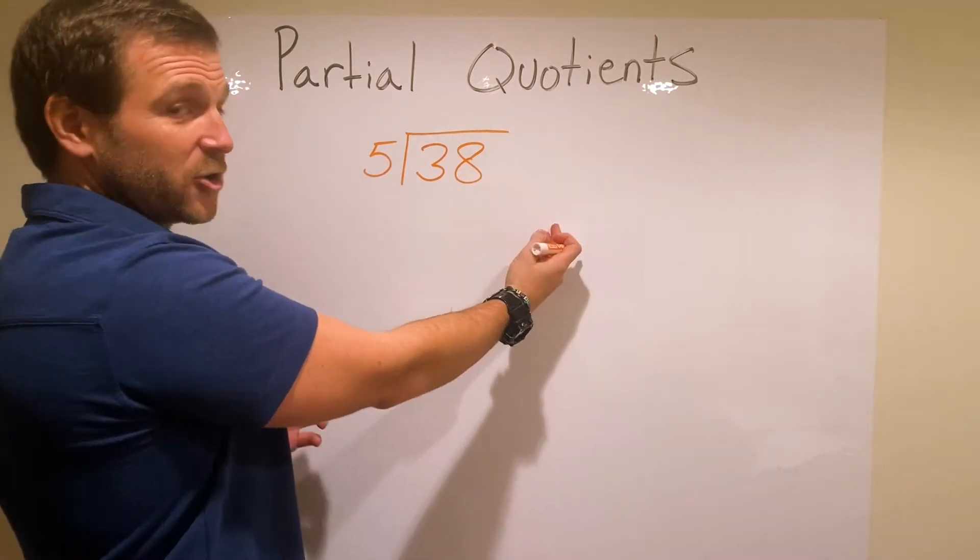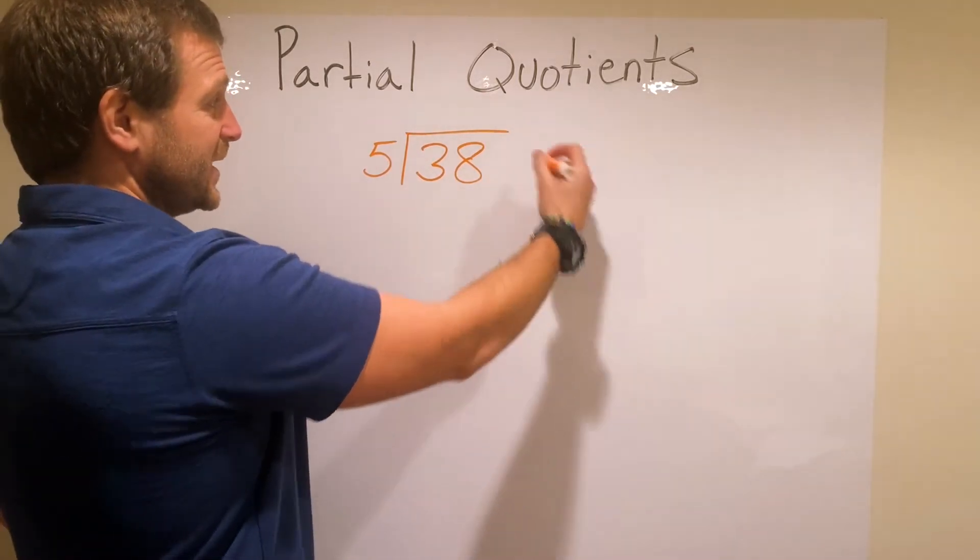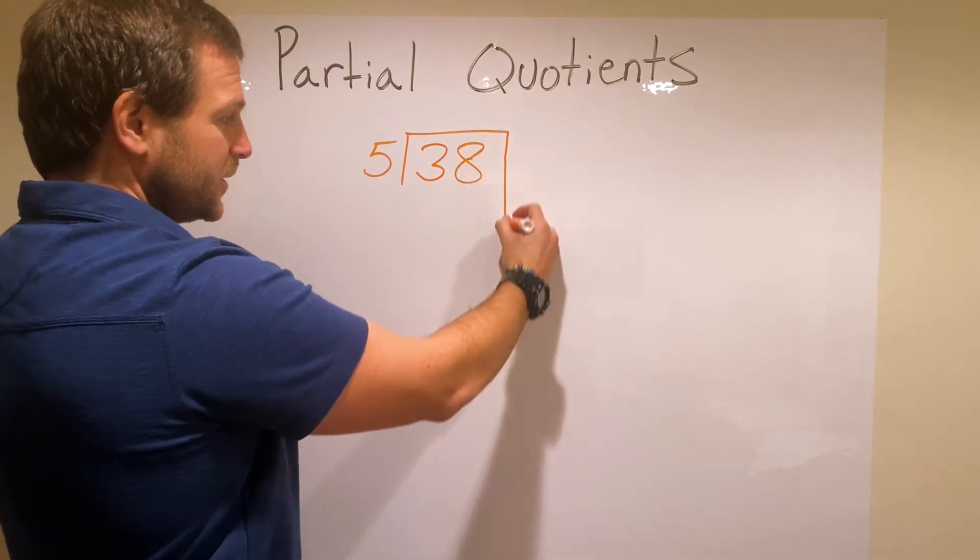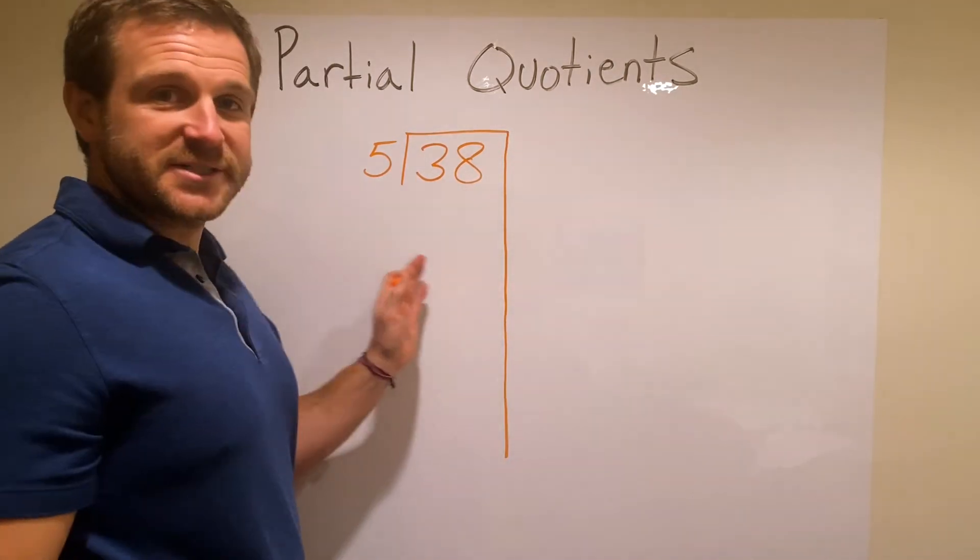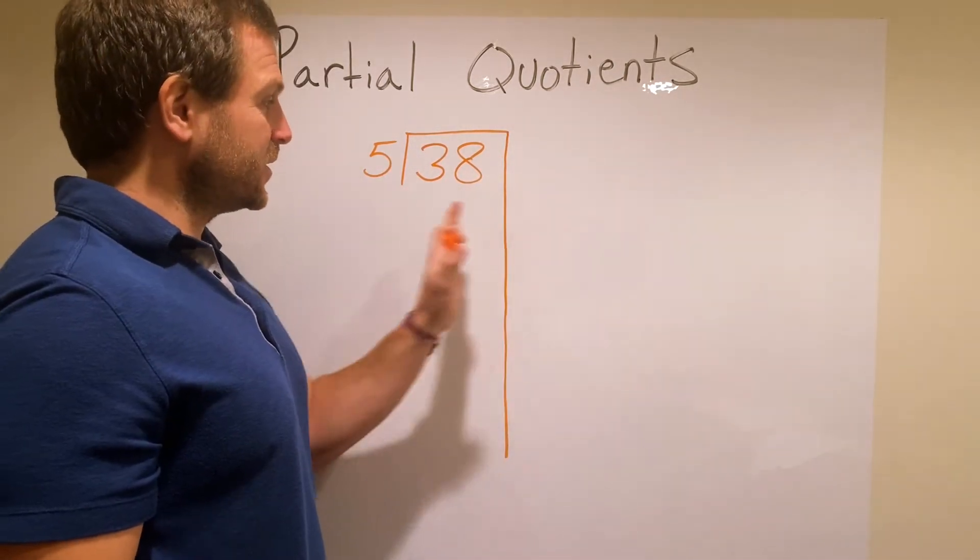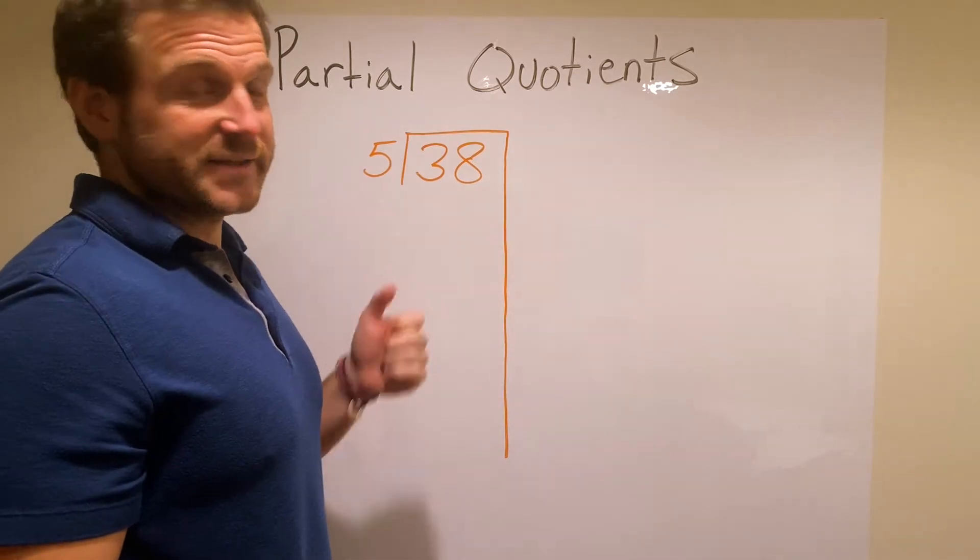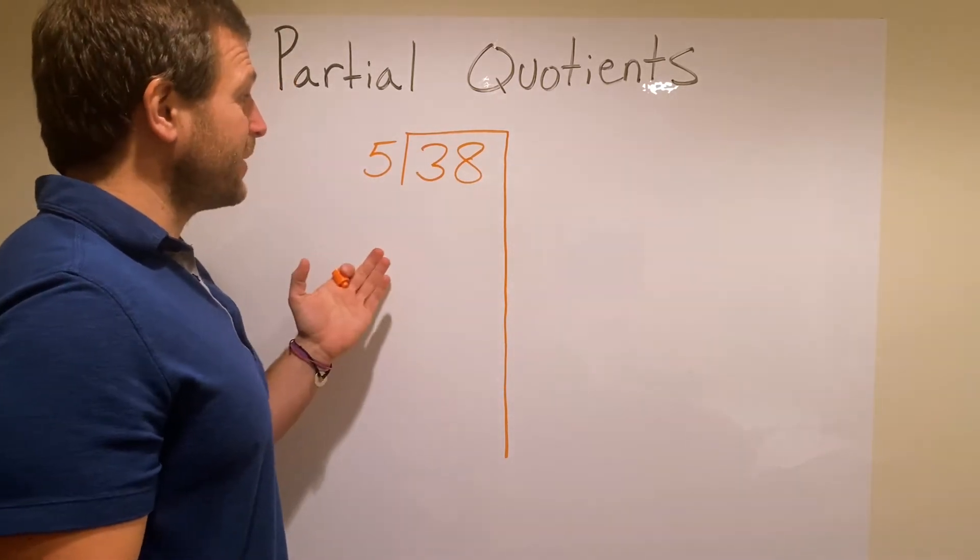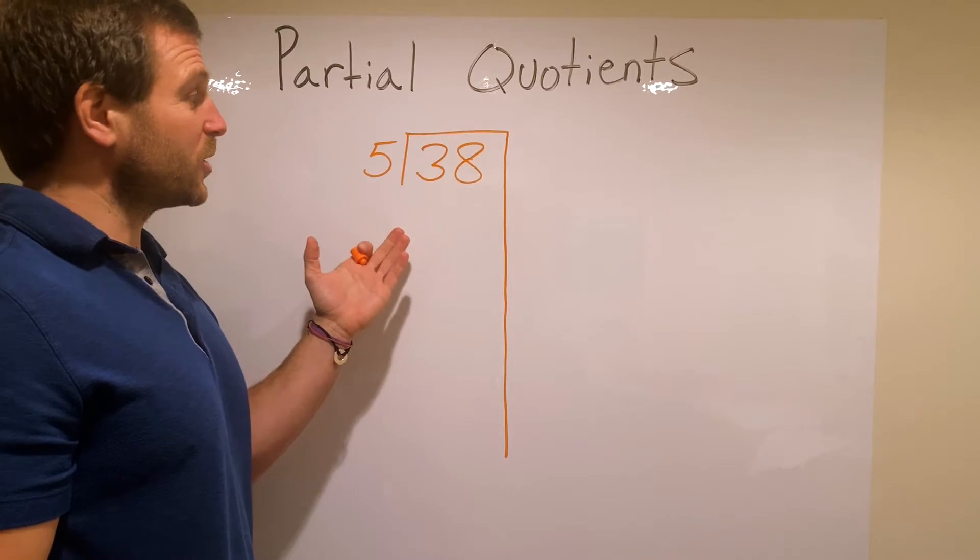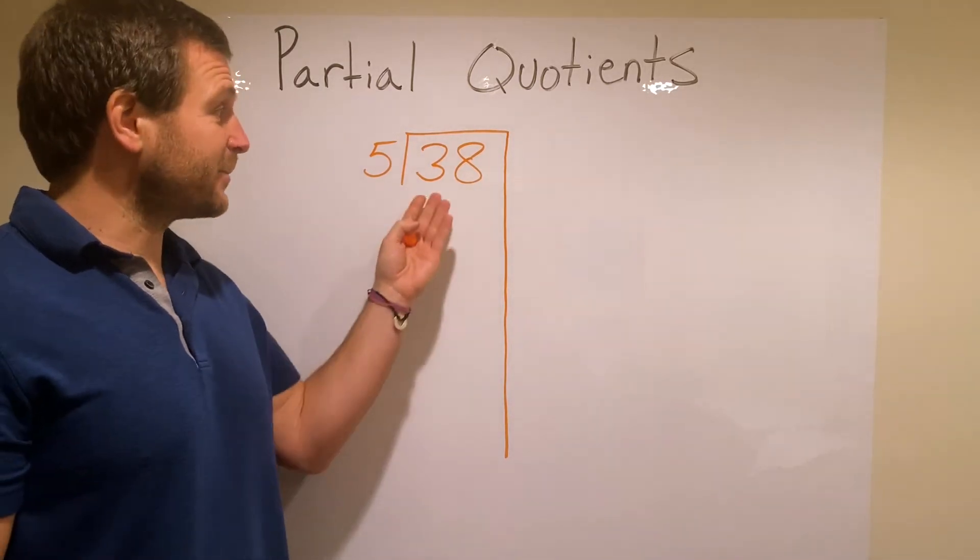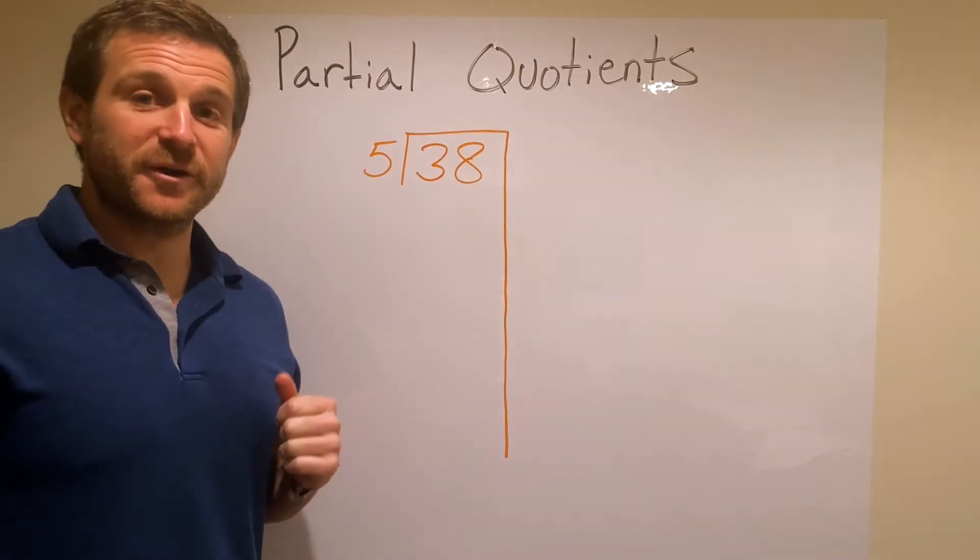So what we're going to do is take our normal equation written like this and then bring down just a borderline here, and this will separate our answer from our numbers inside. So the best thing about partial quotients is when students look at this, the first thing they think is how many times does 5 go into 38. Now some students will get that right off the bat, no problem. Other students might have a little bit more difficulty with it.